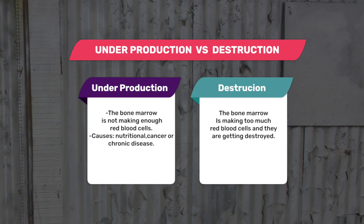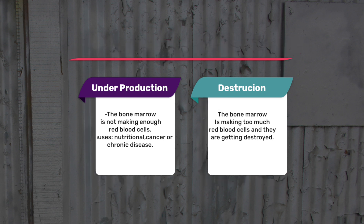With anemia you can differentiate it into two categories: underproduction versus destruction. Underproduction is when the bone marrow is not making enough red blood cells. This can be due to nutritional deficiency such as vitamin B12 or iron deficiency, cancer with chemotherapy causing myelosuppression, anemias of chronic disease such as chronic renal failure causing low erythropoietin levels, and also aplastic anemia.